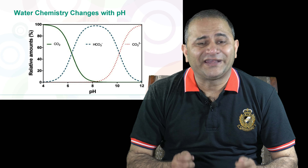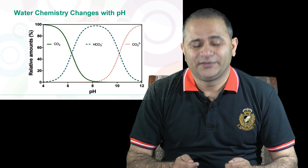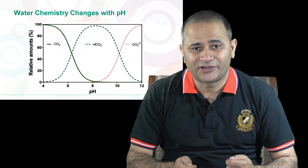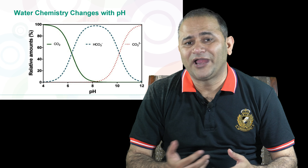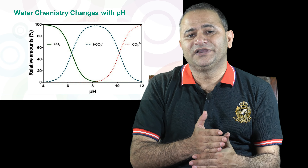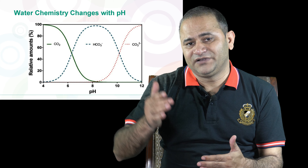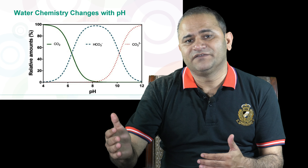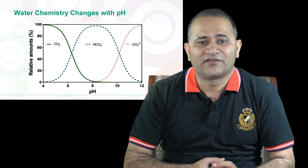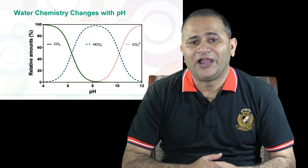If we increase the pH of water, we convert carbon dioxide, bicarbonate, carbonic acid, and carbonate ions into hydroxide ions. Initially CO2 will be converted into carbonic acid, then carbonic acid will be converted into bicarbonate, then bicarbonate will be converted into carbonate, and ultimately at the highest pH level all these ions will be converted into hydroxide ions.